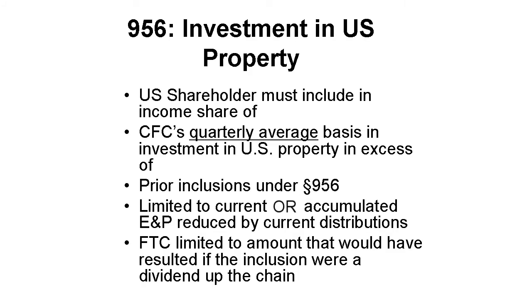It is fully taxable as ordinary income. The amount of the inclusion is the average basis in the U.S. property. This average basis is the sum of the quarter-end amounts, less any prior inclusions under Section 956. This inclusion, however, is limited to current or accumulated E&P, less any current distributions.